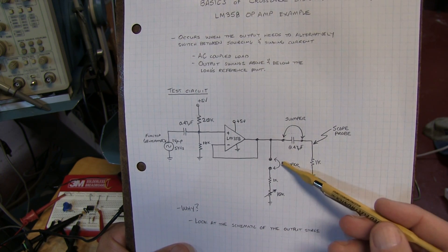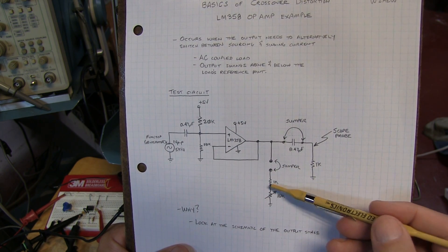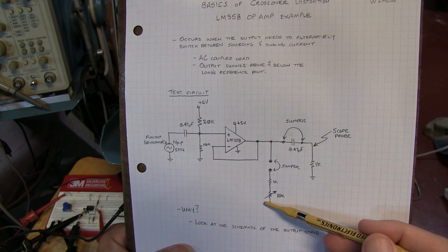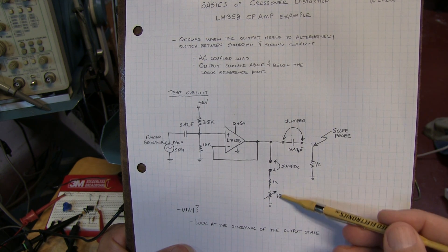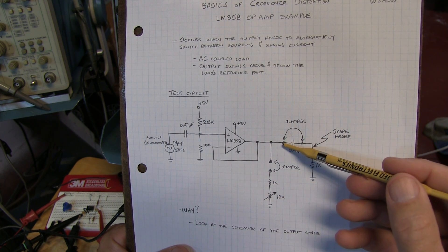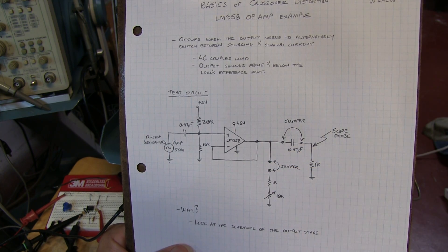I've got a jumper on the test board here that I can put into place and I've got a 1k resistor and a 10k potentiometer here so that we can take a look at the effect of varying the load. And the more current that we pull, the more we can push that crossover distortion out of the picture.